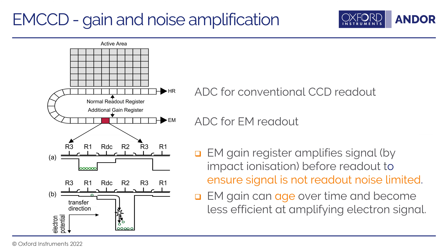Another way to detect very low signals is by using EMCCDs. The active area of a CCD has two ADC channels — a conventional ADC channel and an EM readout channel. In an EMCCD, photoelectrons generated in the silicon are amplified by impact ionization in a gain register before readout, ensuring the signal is not read-noise limited. The photoelectrons are placed in cells under electric potential where impact ionization occurs, so one photoelectron can produce many electrons, allowing detection of extremely small signals approaching single-photon sensitivity.